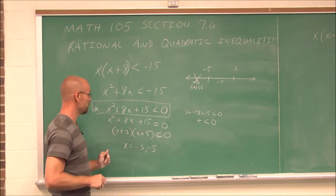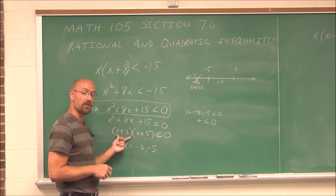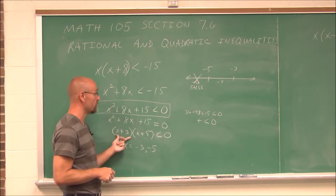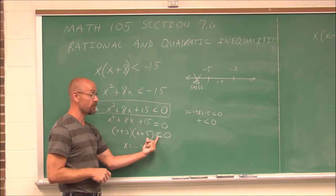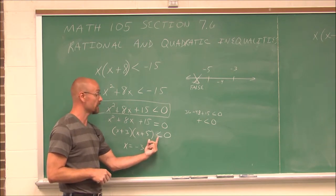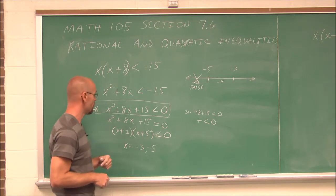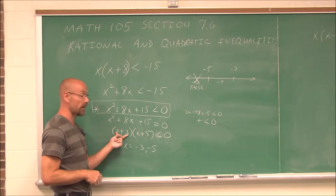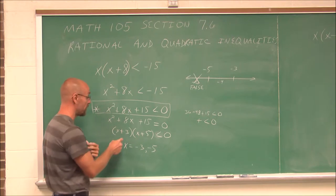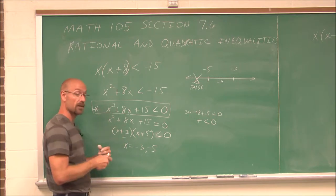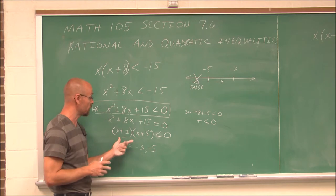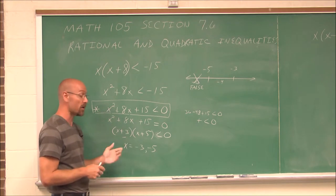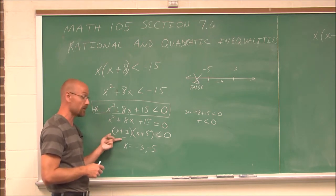I'm going to choose negative 4. When it's in factored form, I just have to ask: is the value going to be negative? Is it less than 0? If I put negative 4 in here, negative 4 plus 3 is a negative value. It doesn't matter what the exact value is when it's in factored form — just whether it's positive or negative.